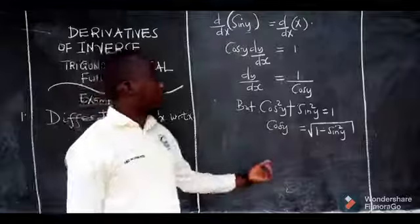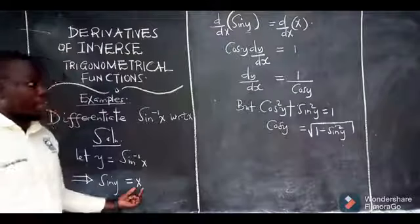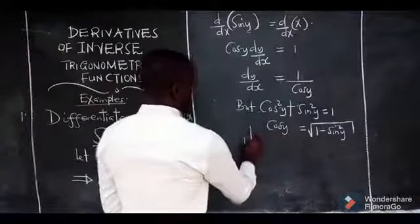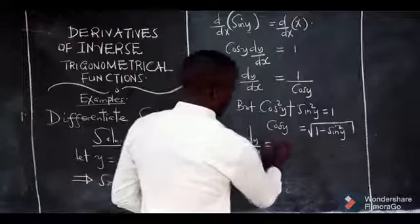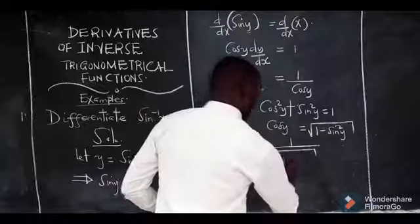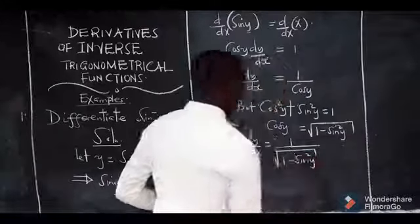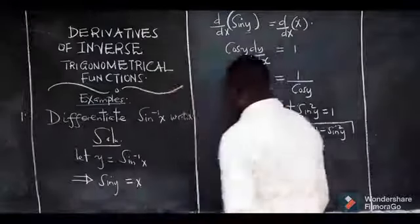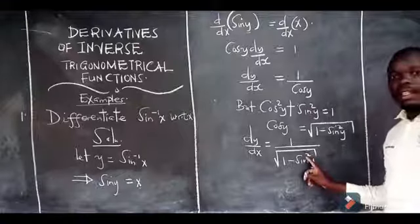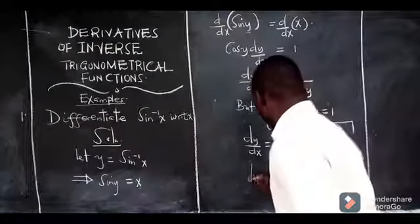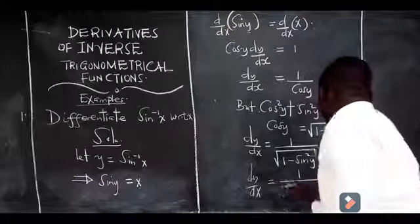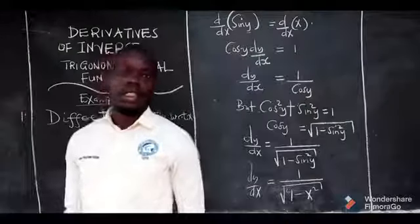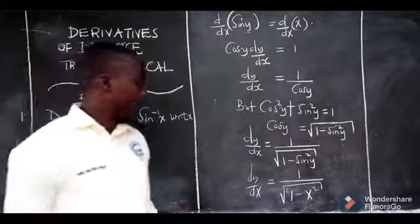So cos(y) becomes that. Alternatively, someone can use a right-angled triangle with Pythagoras theorem and still get back the same expression. So it means dy/dx is going to be 1 over √(1 − sin²(y)). But remember, we know sin(y) equals x, so I'm going to substitute x here. This is squared, meaning we shall get dy/dx as 1 over √(1 − x²). So when you differentiate sine inverse of x, you actually get 1 divided by √(1 − x²).